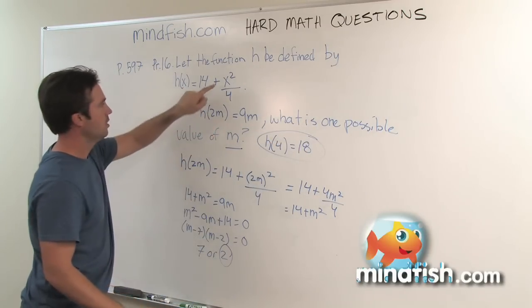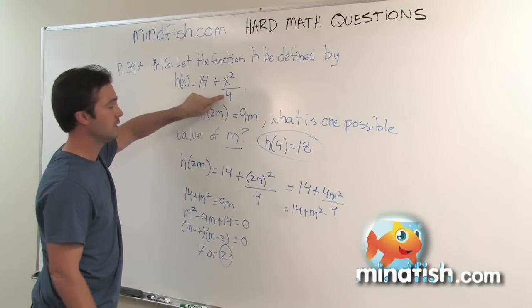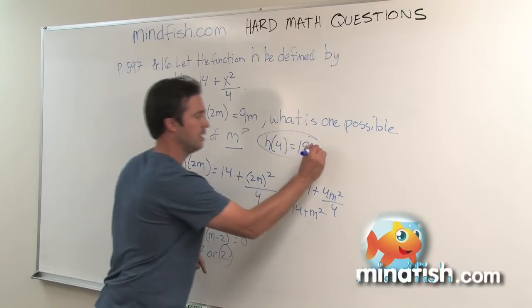So I'm going to check that. Put in h(4), so 4. 4 squared is 16. 16 over 4 is 4. 14 plus 4 is 18. Check.